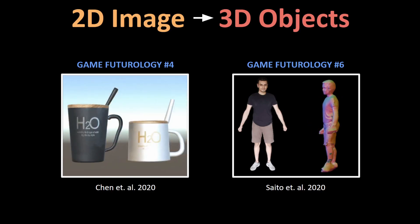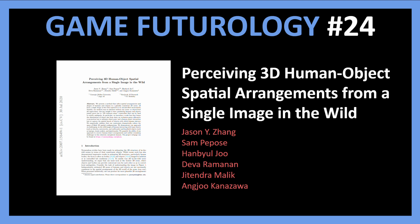Today I want to cover a paper that combines both these methods into a single framework. It is titled 'Perceiving 3D Human Object Spatial Arrangements from a Single Image in the Wild.'